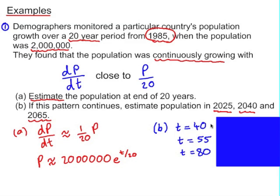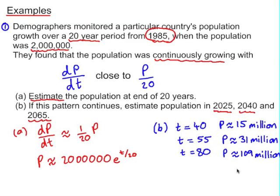Your t values are 40, 55, and 80, and when you substitute these into the formula you found in part a, to the nearest million, you get populations of 15 million, 31 million, and 109 million.